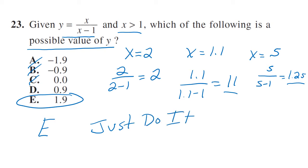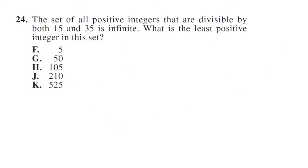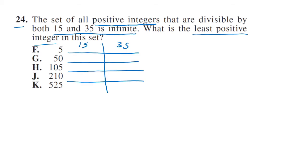The set of all positive integers that are divisible by 15 and 35 is infinite. What is the least positive integer in this set? What's the smallest number that is divisible by 15 and 35? The reason this is question 24 is it's just stated kind of oddly. Is 5 divisible by 15? No. Is 50 divisible by 15? No.